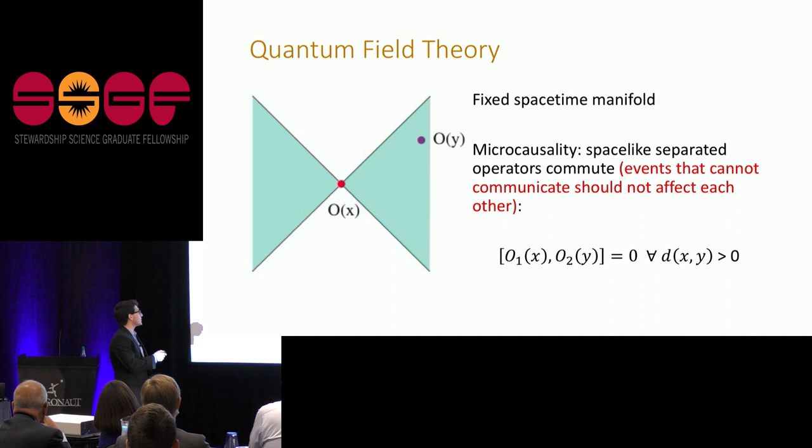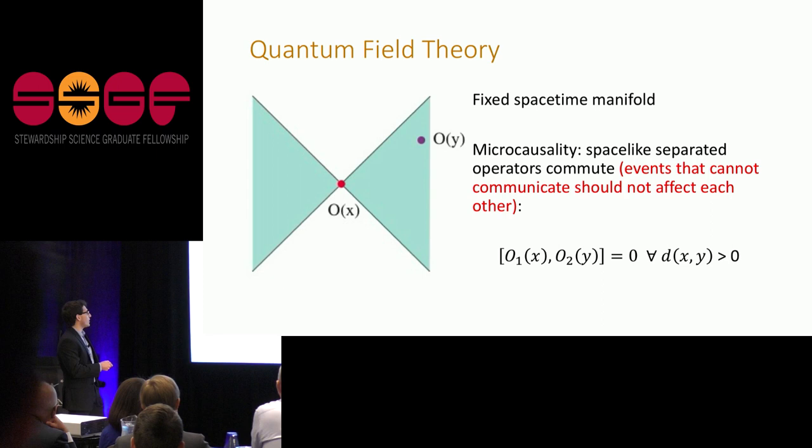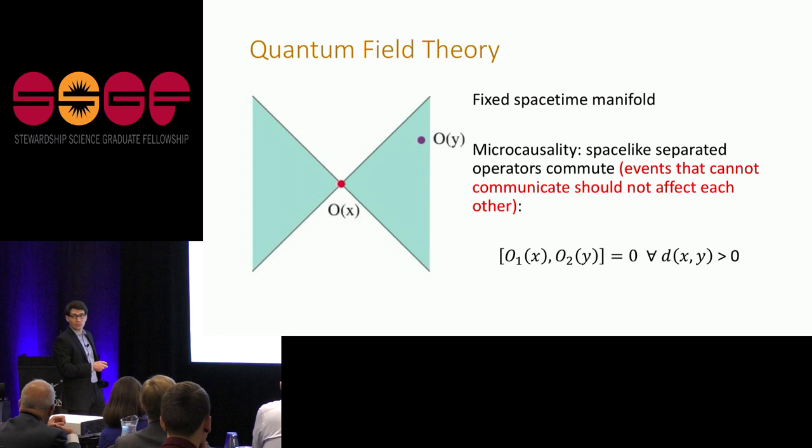And the way that we translate between causality and special relativity in quantum field theory is through something that we call microcausality. The mathematical description of that is that two operators commute if they are space-like separated. So the most intuitive way to understand this is with this picture, O of X and O of Y. So I drew the light cone. A massive observer can, from the point X, can go anywhere to the future here. It could have come from the past anywhere in this white region here. And O of Y is outside this region. So the operators that are local to these points should commute. And what this zero commutator means is that they can't affect each other.